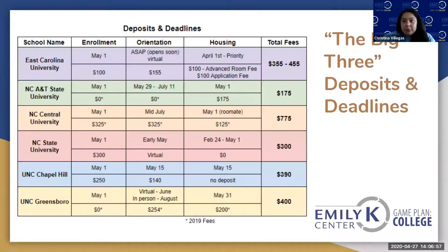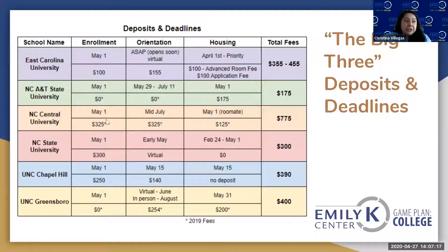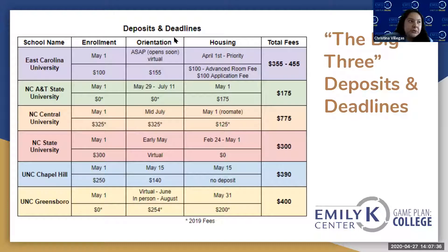Here are a couple of examples of some of our most popular schools. At East Carolina, for instance, enrollment deposits can be as little as zero — some schools don't charge enrollment deposits. Others charge a little more than $100. It varies per school, so it's up to you to find out what yours is and get it taken care of by May 1st. What all schools have in common is that you have to let them know you're coming by May 1st.